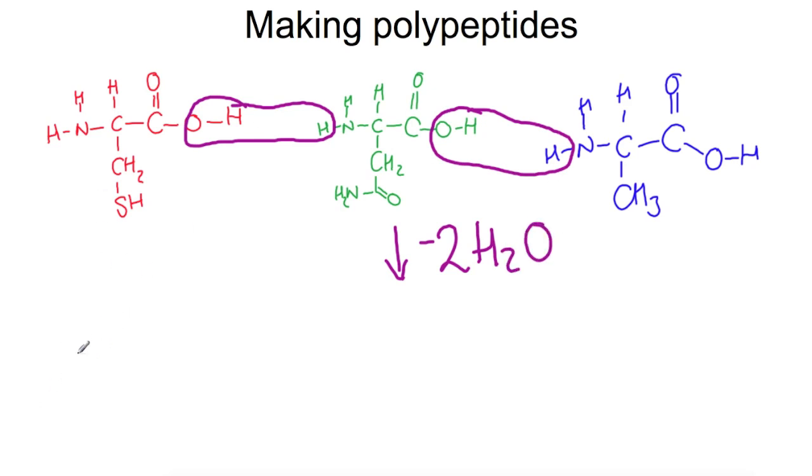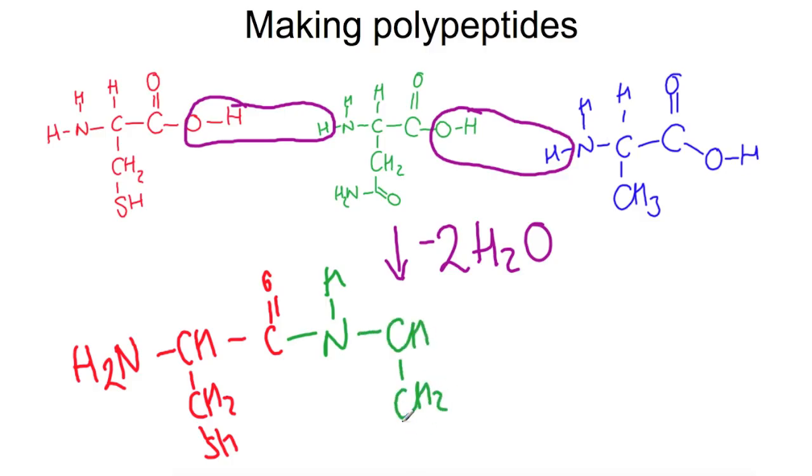So the structure of our polypeptide: we've got our NH2 at the side, we've got a CH attached to a CH2 and an SH which is then joined to the CO. That CO has then formed the amide link to the N which still has a hydrogen attached to it. That's then attached to this carbon which has a side chain of CH2 C double bond O and an NH2.